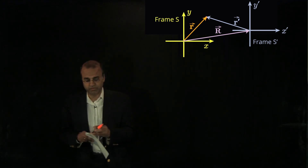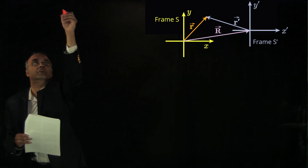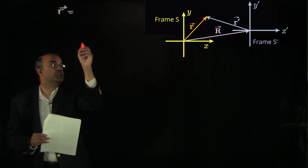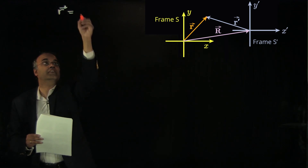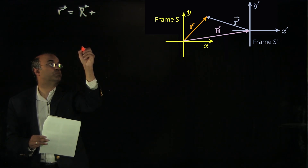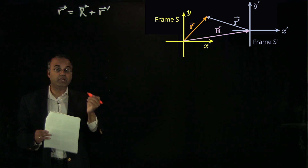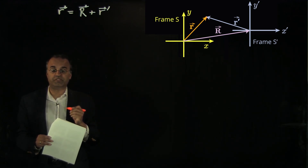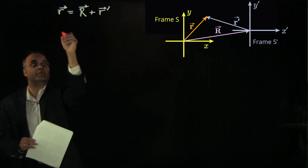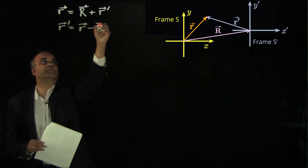From the geometry of the diagram, we can see that the position measured by observer S — which is r — is equal to the position of observer S prime relative to observer S, which is R, plus the position vector measured by the observer at S prime, which is r prime. We can rearrange this to write that r prime is equal to r minus R.